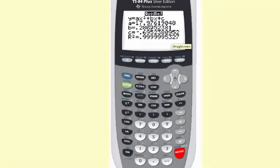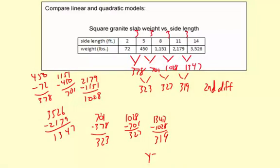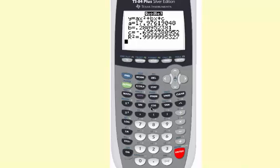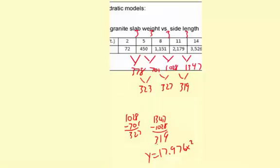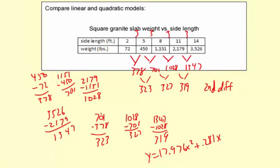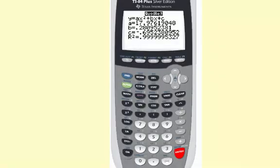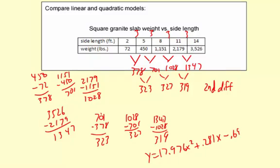So it's going to be 17.976 x squared, and don't be afraid to use a few decimal points here. And then plus 0.281 x, then minus 0.695. Okay, so here's the quadratic model: y equals 17.976 x squared plus 0.281 x minus 0.695.